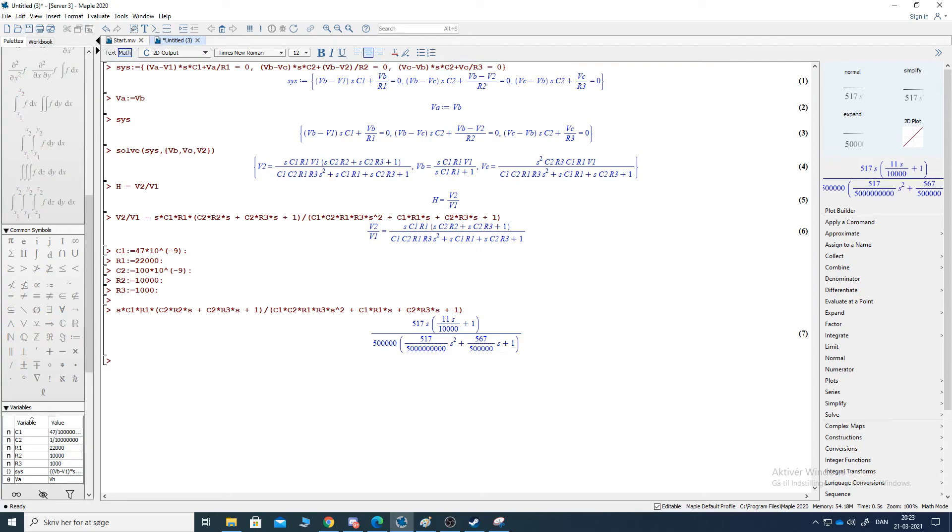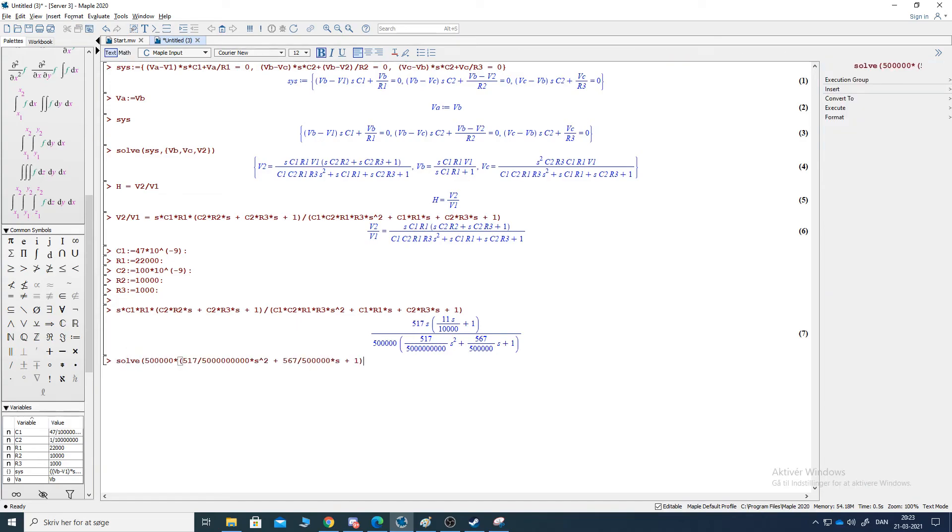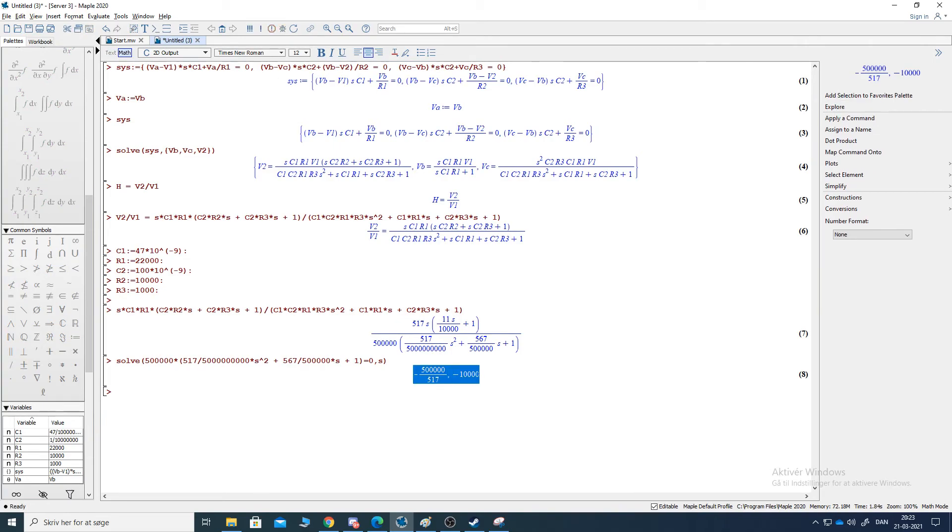In order to find the poles, we just have to solve the equation when the denominator is zero. We can do that very easily. We have to solve the equation with respect to s. So solve the denominator zero comma s. We find that these frequencies, these are the frequencies where the poles are located. Minus 10,000 and minus 10,000 and some other frequency.